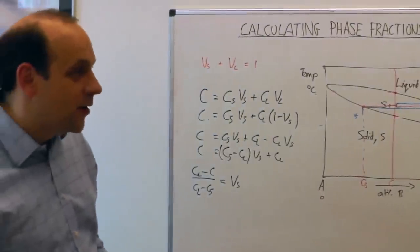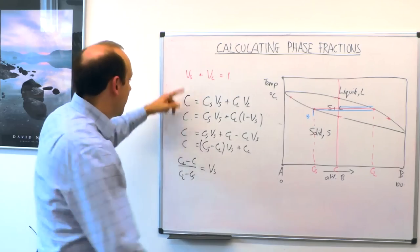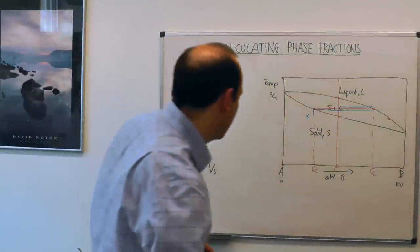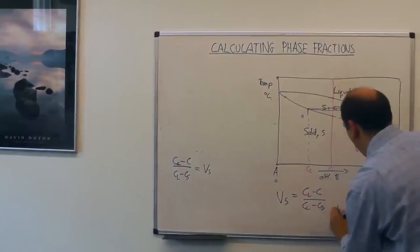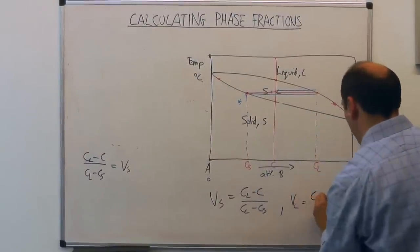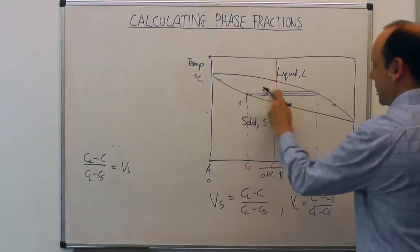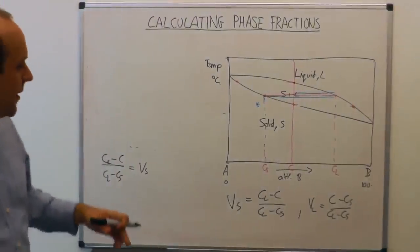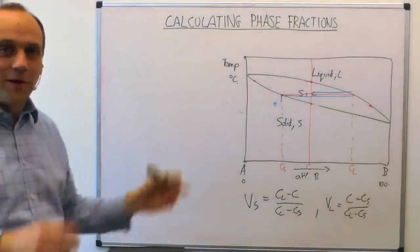This is called the Lever Rule. We can write it in two forms: the volume fraction of liquid VL equals (Cl − C) / (Cl − Cs), or alternatively (C − Cs) / (Cl − Cs). The volume fraction of liquid is the opposite little distance — (C − Cs) — divided by the whole distance (Cl − Cs). They're complementary to each other, and the volume fractions add to one, so you can work out either one from the other.